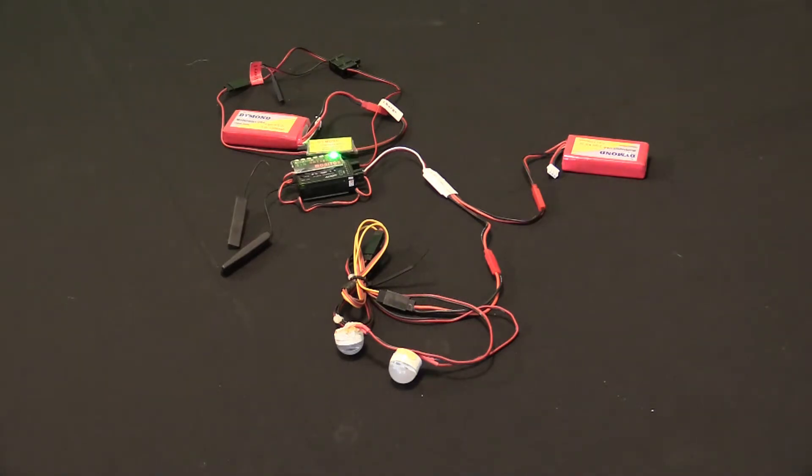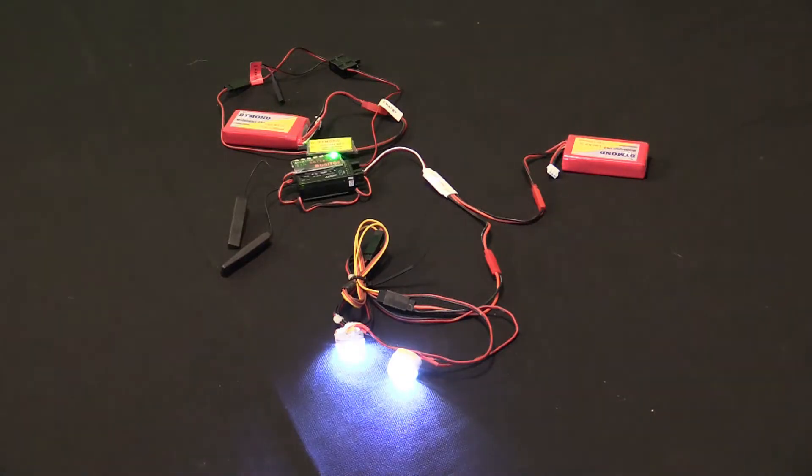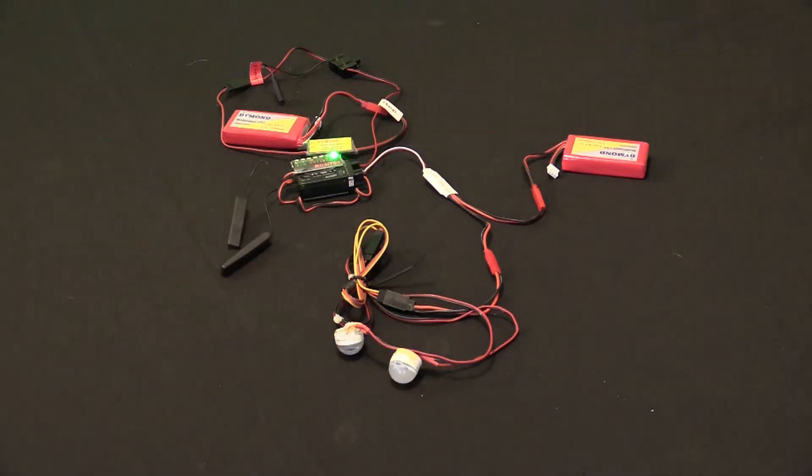Another nice thing that you can do with this is turn on smoke and other devices in the same manner. What I'm going to do is hook this auxiliary channel and mix it in with my flap channels. When I get to 25% of my flaps, the landing lights will turn on and then turn off when I pull the flaps back up.